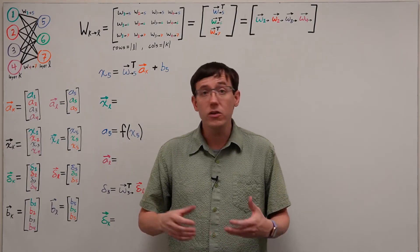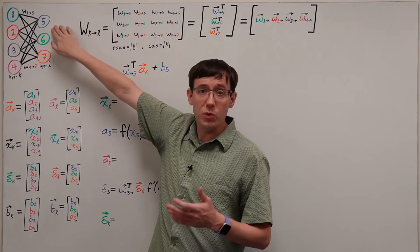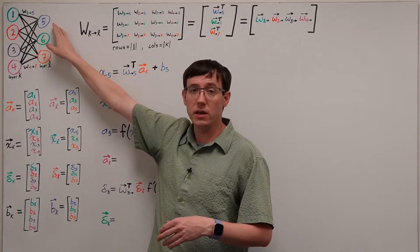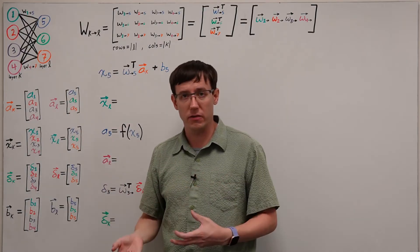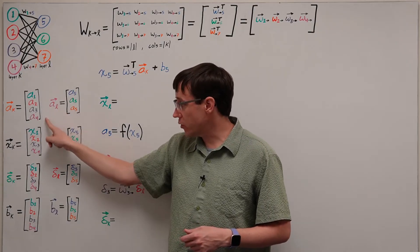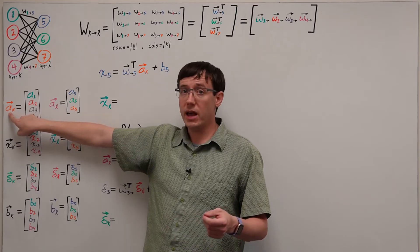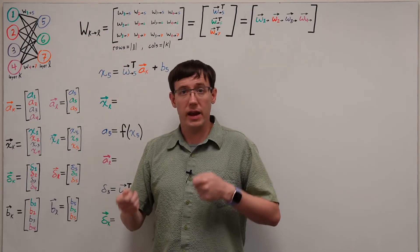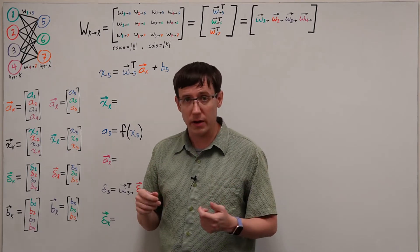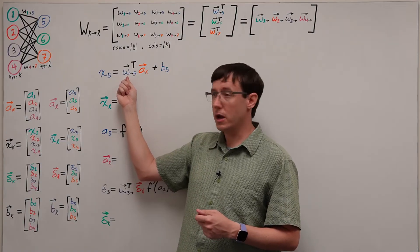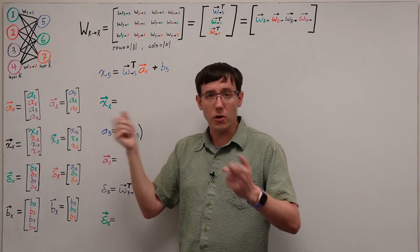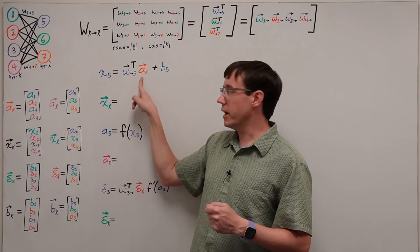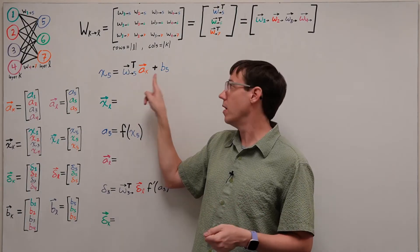To translate the computations we've been performing into this notation, we can first think about how a node computes its weighted sum of inputs. The input x5 that goes into the activation function for node 5 is calculated as a weighted sum of previous layer activations plus a bias. And so if we've collected those previous layer activations into the vector Ak, and we have a vector of all of the weights coming into node 5, then the weighted sum of inputs is a dot product between those two vectors. Another way of writing the dot product is to transpose the first vector and multiply the row vector with the column vector. So we can express the input to node 5 as the weight vector coming into node 5 transposed times the activation vector for the previous layer plus node 5's bias.